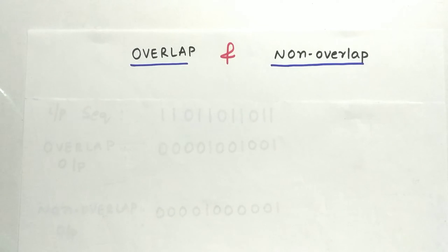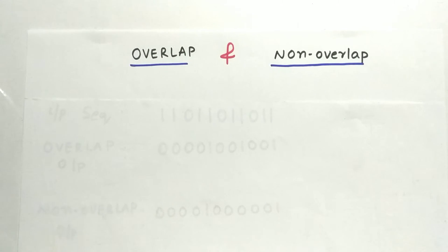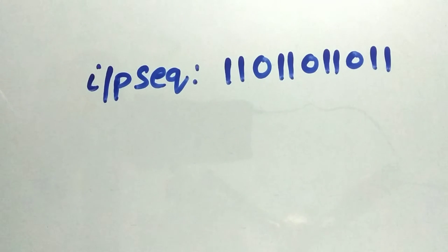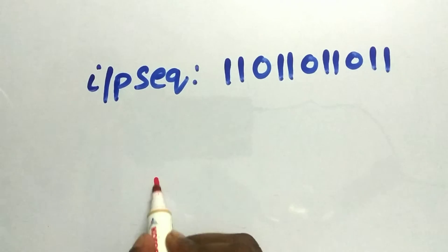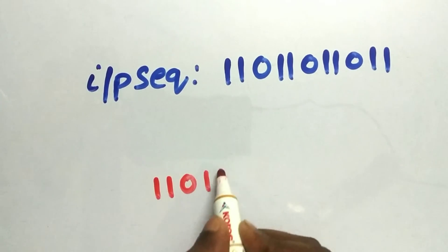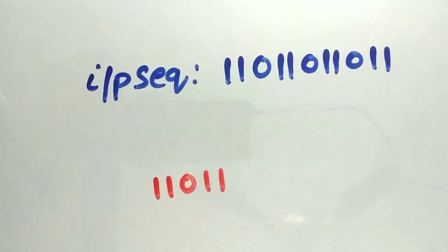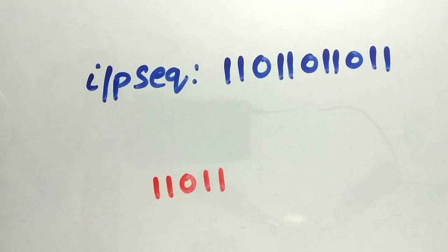Before going to the sequence detector, let us understand the terms overlap and non-overlap by using an input sequence. From this input sequence we need to find the pattern 11011. We have two types: we can find it using overlap and non-overlap. First we will see the overlap output and then we will go with non-overlap.